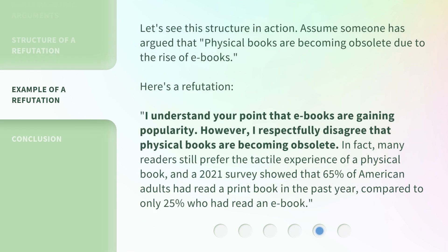Let's see this structure in action. Assume someone has argued that physical books are becoming obsolete due to the rise of e-books. Here's a refutation: "I understand your point that e-books are gaining popularity. However, I respectfully disagree that physical books are becoming obsolete. In fact, many readers still prefer the tactile experience of a physical book, and a 2021 survey showed that 65% of American adults had read a print book in the past year, compared to only 25% who had read an e-book."